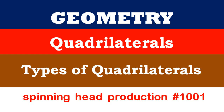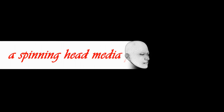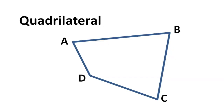In this lesson, we will learn about the different types of quadrilaterals and also how they are related to each other. A quadrilateral is a four-sided geometric figure with no particular relation between the sides.